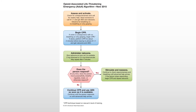Administer naloxone — two milligrams intranasally or 0.4 milligrams intramuscularly, repeatable after four minutes. If it's not an opiate overdose, naloxone won't do anything. If it works, the person should wake up and respond. Any time the person moves purposefully, breathes regularly, moans, or otherwise responds, stimulate them — do a sternal rub and check responsiveness until advanced help arrives. If they stop responding, start CPR and repeat naloxone. Continue rescue breathing and CPR, and use the AED as soon as it's available. When people stop breathing from an opiate overdose, the heart follows very quickly, so CPR and the AED are often needed alongside naloxone.